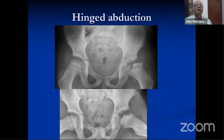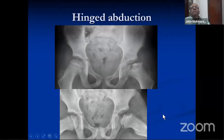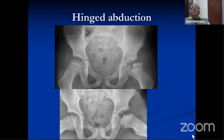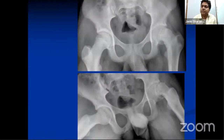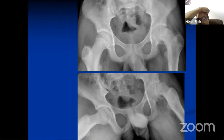What happens when you abduct the hip? The pelvis tilts. It will hit the pelvis and the pelvis will tilt. When examining, you need to make sure the pelvis is stable; otherwise you will think it is hip movement. That is what you mean by hinge abduction. As you abduct the hip, the center of joint movement moves from the center of the hip to the lateral margin of the acetabulum — it is hinging on the lateral margin of the acetabulum. There will be paradoxical widening of the medial joint space. Can you describe this next X-ray?